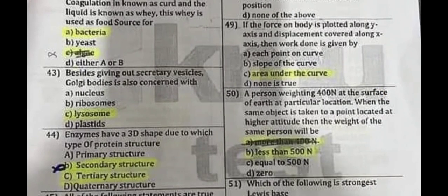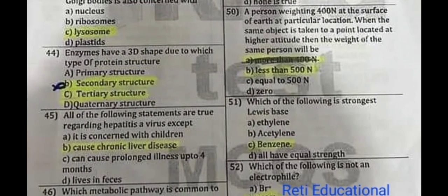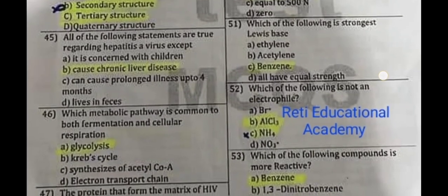Question number 50: A person weighing 400 newtons at the surface of the earth — when the same person is taken to a higher altitude, the weight will be less than 400 newtons. Question number 51: Which one of the following is the strongest Lewis base? The correct answer is benzene. Question number 52: Which of the following is not an electrophile? The correct answer is AlCl₃.